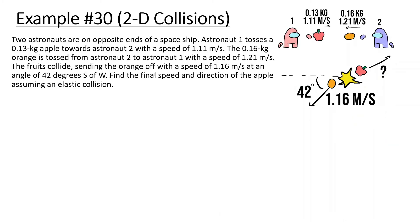The last problem of this chapter: two astronauts are on opposite ends of a spaceship. Astronaut 1 tosses a 0.13 kg apple towards astronaut 2 at 1.11 m/s. A 0.16 kg orange is tossed from astronaut 2 to astronaut 1 at 1.21 m/s. The fruits collide, sending the orange off at 1.16 m/s at an angle of 42 degrees south of west. Find the speed and direction of the apple, assuming elastic collision. First, let's find the orange's final velocity components.